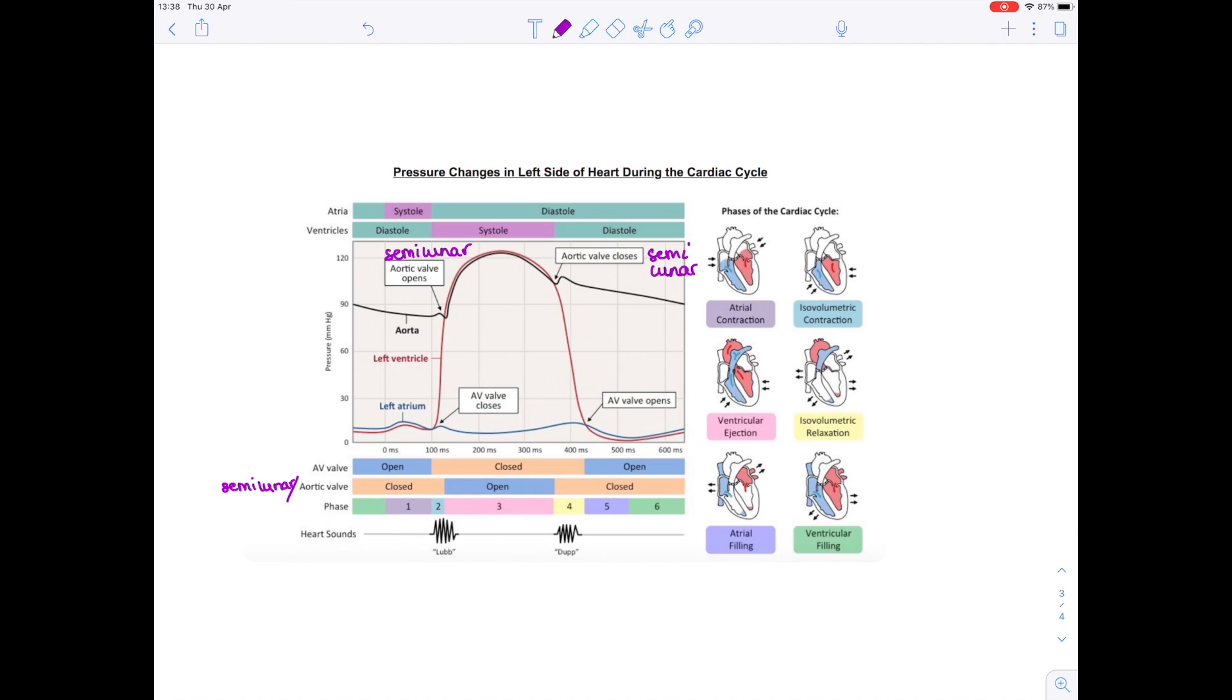So let's start by looking at the left atrium blue line. So we can see that it is in systole, which means it's contracting, which is why the pressure goes up. Then the left ventricle starts to fill with blood, hence why you see the pressure increasing.